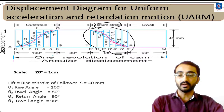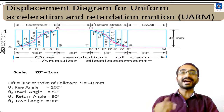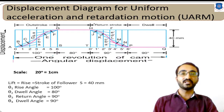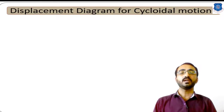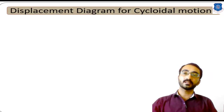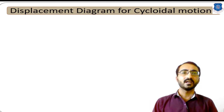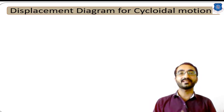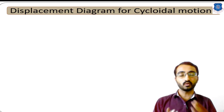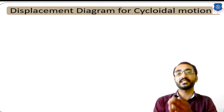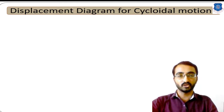Now let's learn the last type of displacement diagram — cycloidal motion. This fourth type of motion is rarely used; in most examples you will encounter the first three types. But we need to learn how to draw the displacement diagram for cycloidal motion.